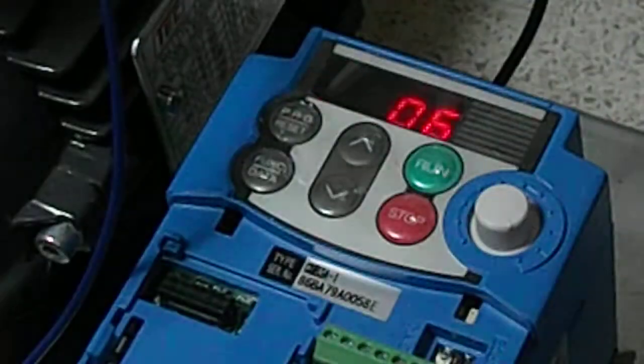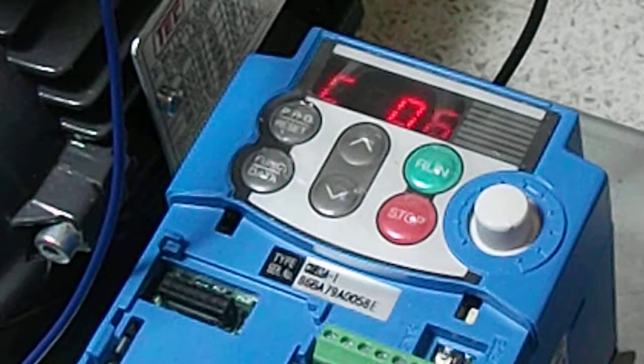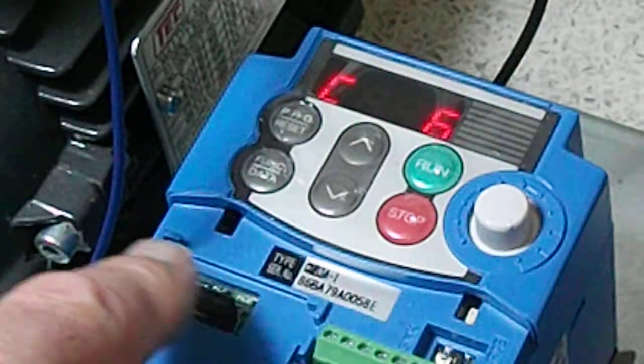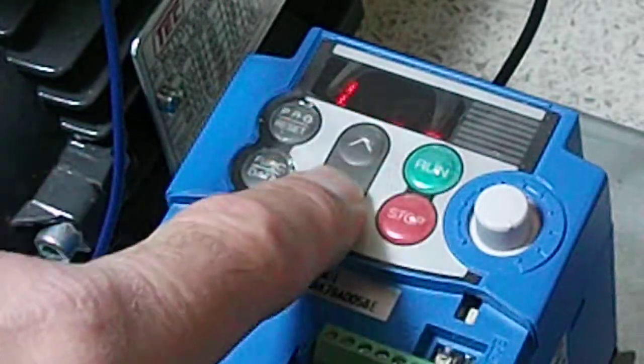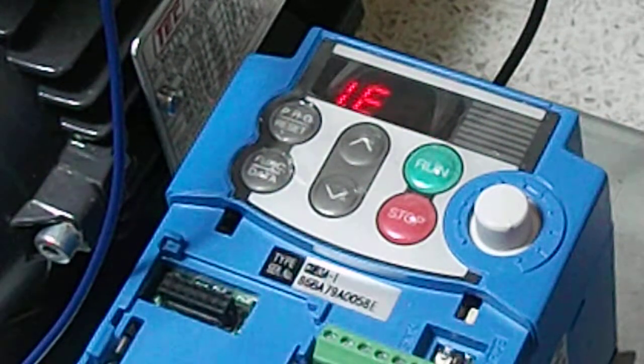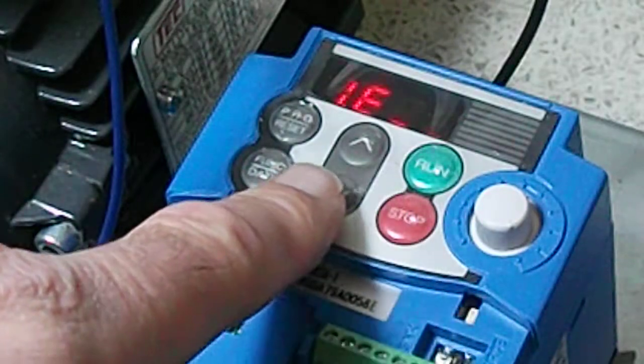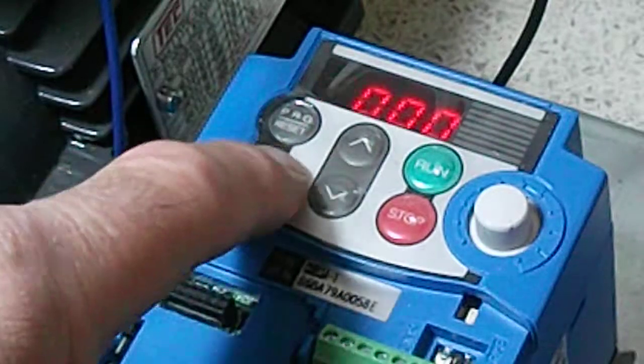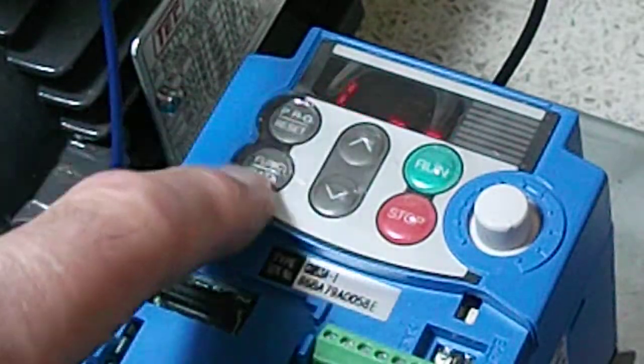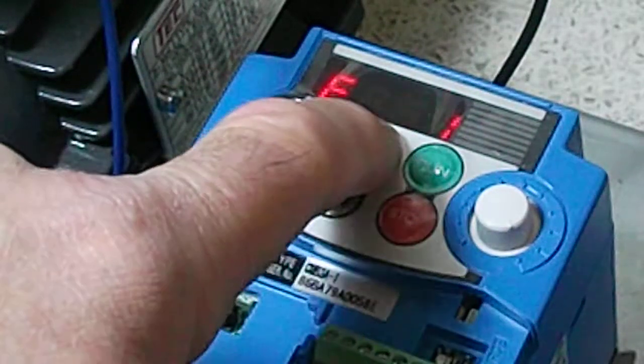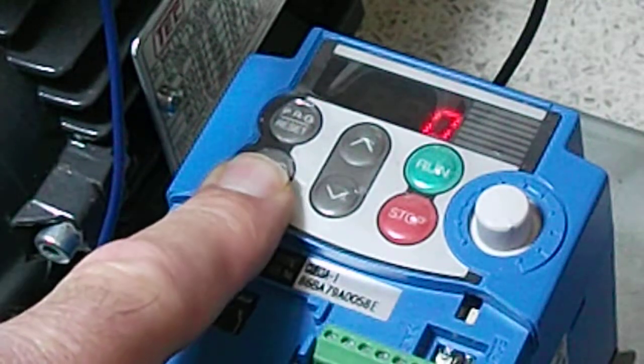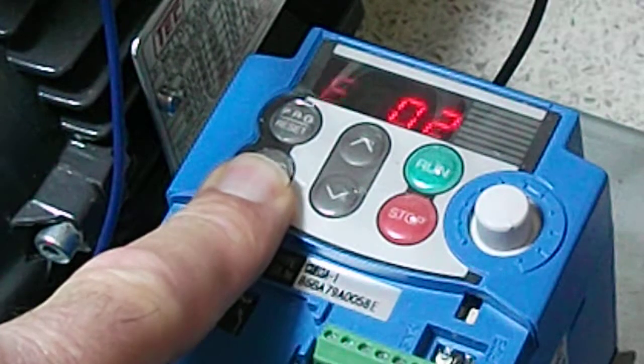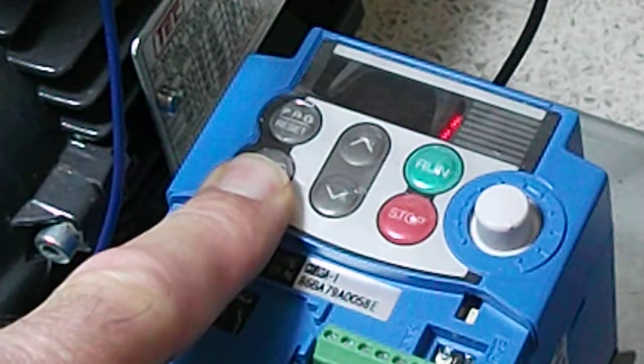So let's have a look at that again. So go into E01, and that's got to be set to zero, which it is. Then E02 is set to one, which it is.